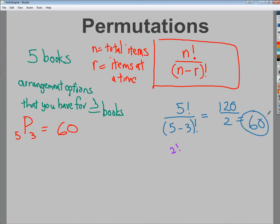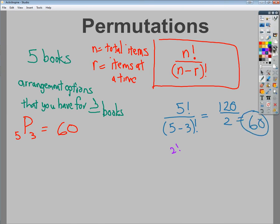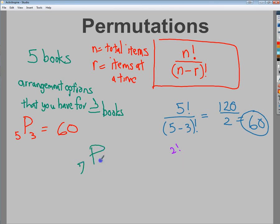Anytime you see that sort of setup - if I have a permutation of seven items and I want to know about four of them, how many opportunities I can arrange the top four - then I would just do seven factorial over seven minus four, and then I can get my answer.